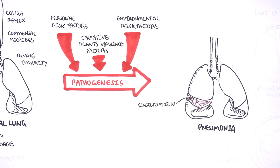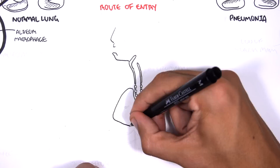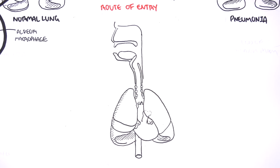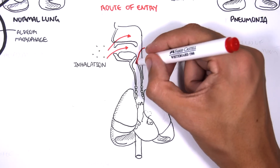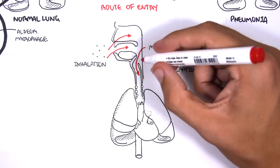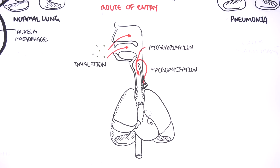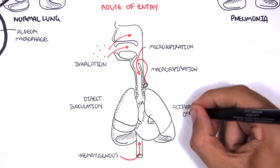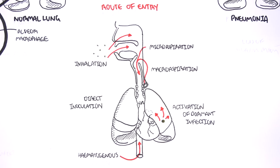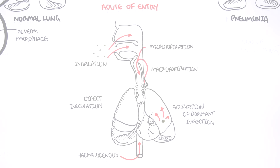The causative agents have a few modes of entry into the lungs. They can be inhaled, which is the most common route of entry. The microbes can be aspirated from the upper respiratory tract — this is called microaspiration — or they can enter from the GIT, known as macroaspiration. The microbes can also enter via hematogenous spread, direct inoculation, or through activation of dormant infections such as in TB. In summary, the microbes have multiple routes of entry, and together with virulent factors and personal and environmental risk factors, they can cause infection and pneumonia.